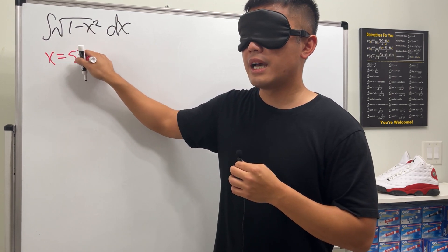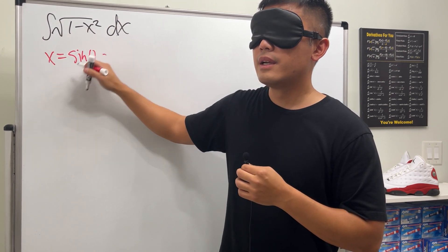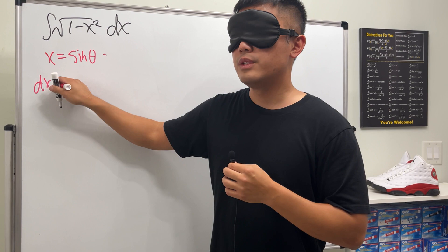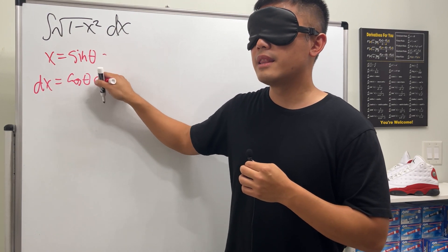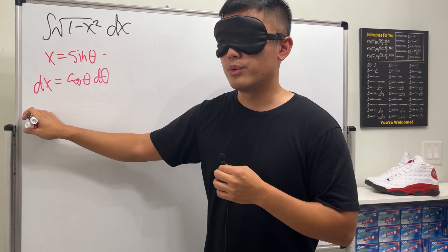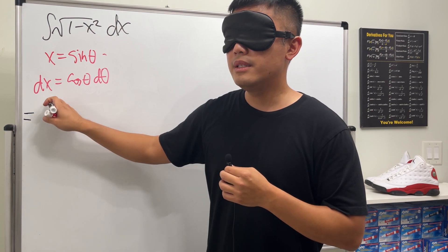We'll do a trig substitution. Let x equal sine theta, and then differentiate both sides, so dx is equal to cosine theta d theta. Then we take the integral to the theta world. We will get the integral of the